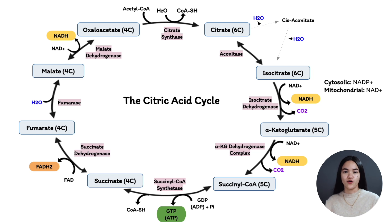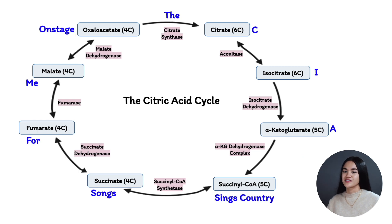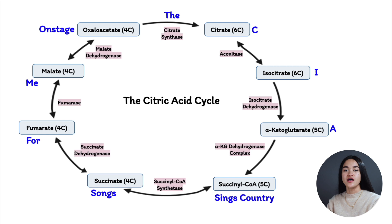There are many intermediates involved, so here's a mnemonic to remember them: 'The CIA sings country songs for me on stage.' C = citrate, I = isocitrate, A = alpha-ketoglutarate, Sings Country = succinyl-CoA (country for CoA), Songs = succinate, For = fumarate, Me = malate, On Stage = oxaloacetate. Use this to remember the intermediates and never forget them again.